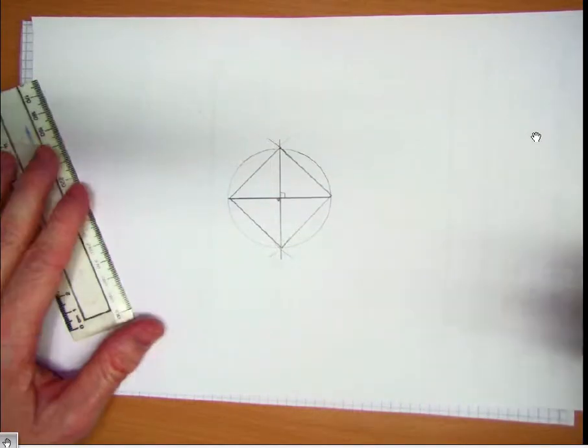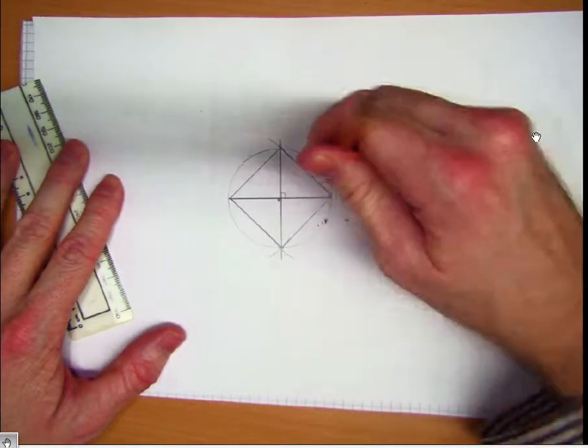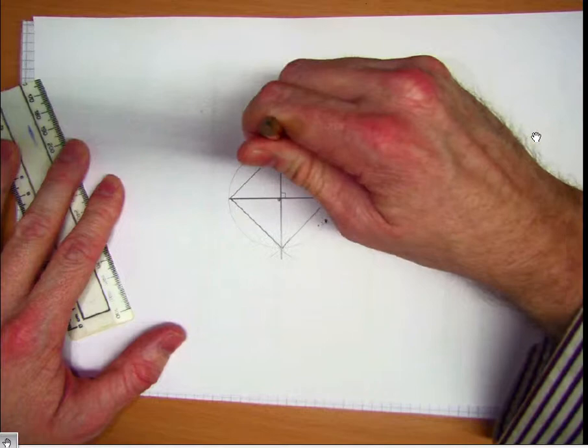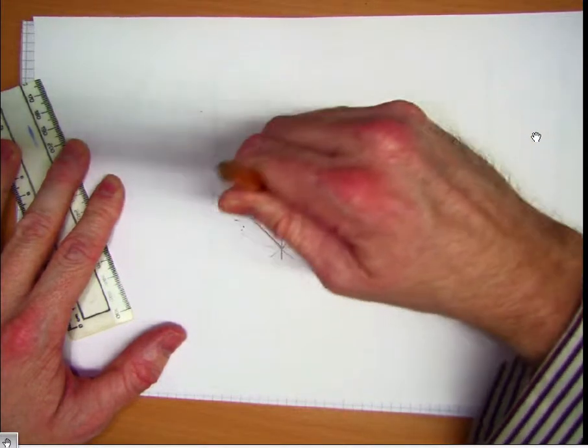And then you can erase the other parts around the arcs and the circle and the diagonals if you want to, to just have a square.